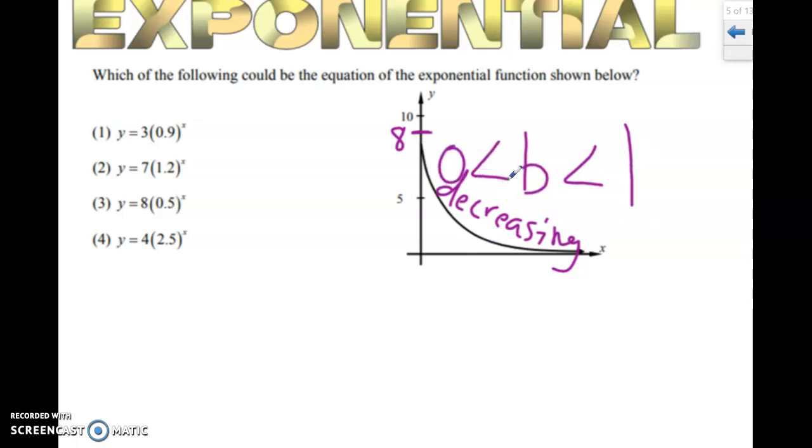So that's why we use that form right there. So a y-intercept that is clearly bigger than 5, not 3, not 4. We can get rid of those. It's got to be 7 or 8, and it's decreasing. Well, this right here is bigger than 1, so that's going to increase. We got to go with choice number 3.